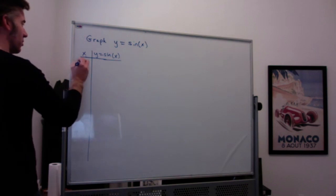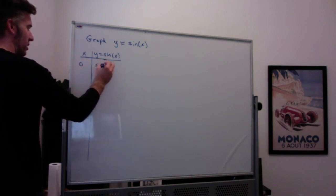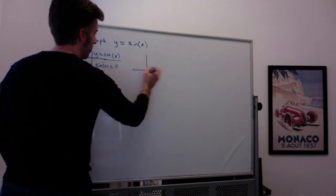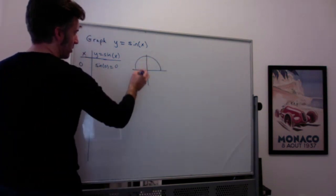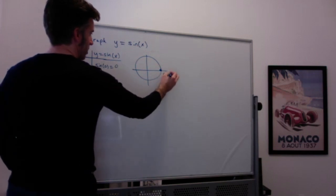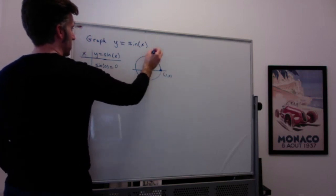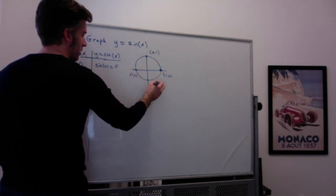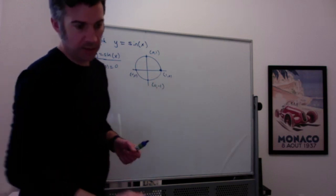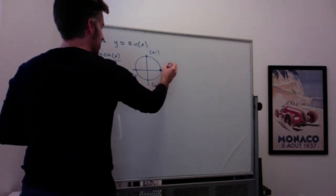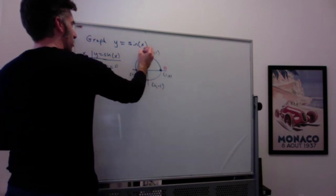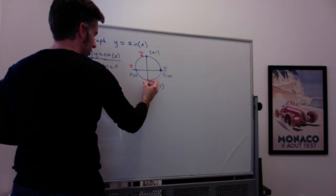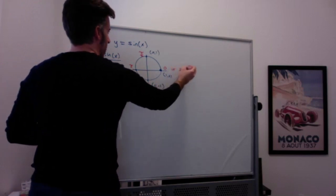I'll start with 0 radians, and sine of 0 radians is 0. I often use my unit circle when thinking about this. On the unit circle, the key points are (1, 0), (0, 1), (−1, 0), and (0, −1), corresponding to angles 0, π/2, π, 3π/2, and 2π radians.